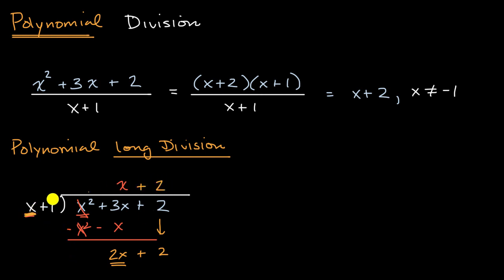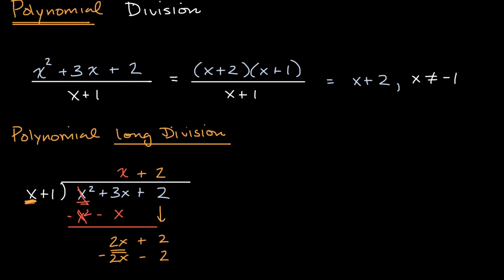Two times x plus one, two times x is 2x, two times one is two. You can subtract these, and then you are going to be left with nothing. Two minus two is zero, 2x minus 2x is zero. So in this situation, it divided cleanly into it, and we got x plus two, which is exactly what we had over there.